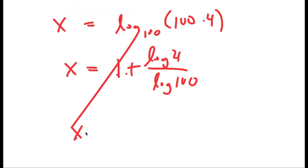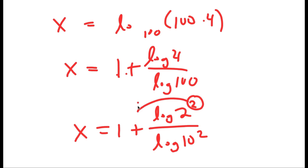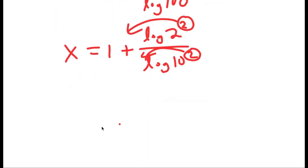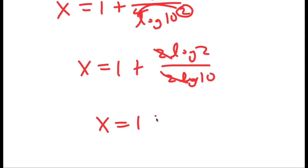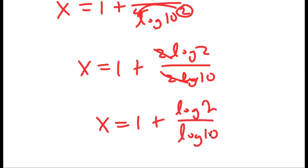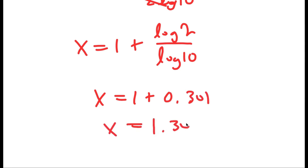Now log of 4 is log of 2 squared, and log of 100 is log of 10 squared. Moving the exponents to the front, I get x equals 1 plus 2 log 2 over 2 log 10. The 2s cancel out, giving x equals 1 plus log 2 over log 10, which equals 1 plus 0.301. So x equals 1.301.